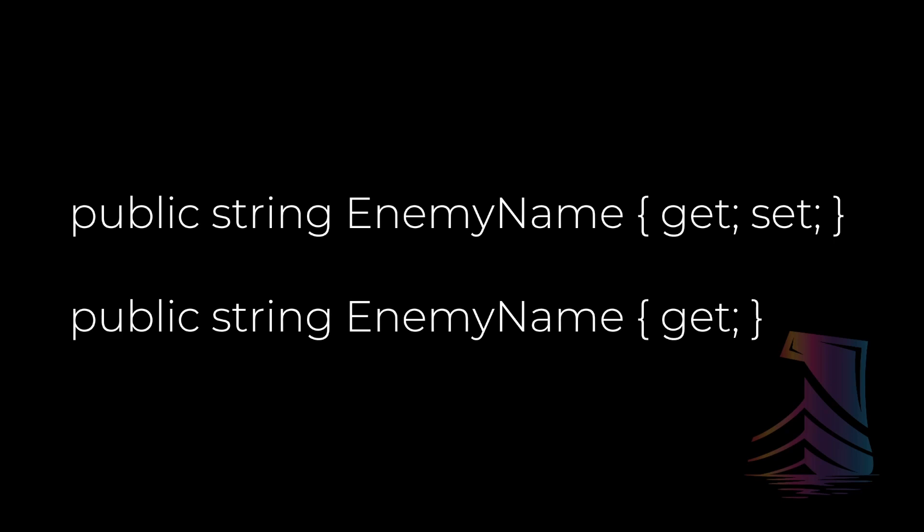A couple of things to note. You can't have an auto property that is simply a set — after all, what's the point of setting data if you have no way to access it? Additionally, if you use an auto property with a set, you cannot put a value check like if not equal to Tim. If you need a check, you'll have to handle it like the previous example, with a private variable that is accessed via the property.